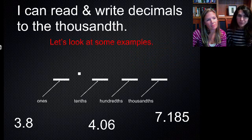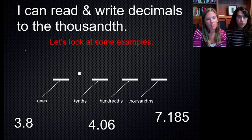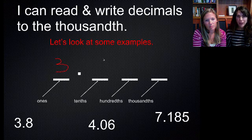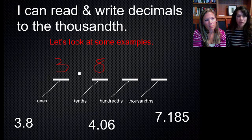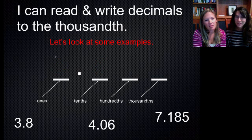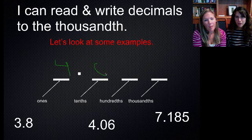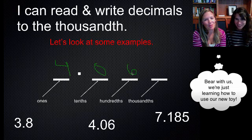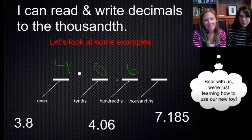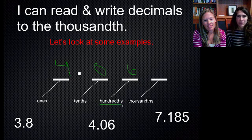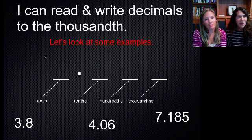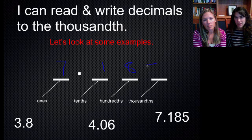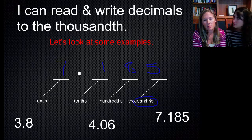And since we ended on that word thousandths, that's where we get to say that. Here's a couple more examples for you. Instead of saying 3.8, now we are going to say 3 and 8 tenths. And once again, since we ended on that place value of tenths, that's why we get to say tenths. Next one we have would be 4 and 6 hundredths. That one we had to be careful because we wanted to make sure that since we were in the hundredths place value, we remembered that zero and said it correctly. We have 7 as our whole number, so 7 and 185 thousandths.